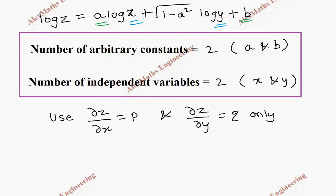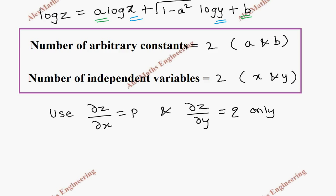Now let's take the given expression and find its partial derivative. So differentiate partially with respect to x. So log z is 1/z and z differentiation with respect to x is ∂z/∂x. And on the other side, it is a constant. Log x differentiation is 1/x.